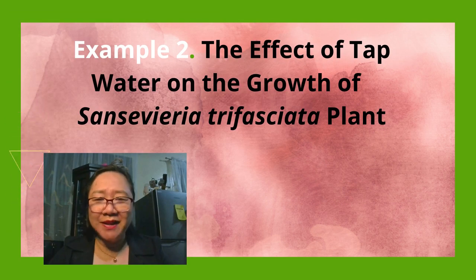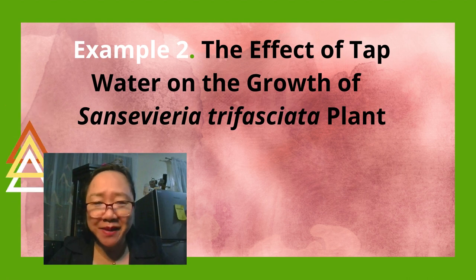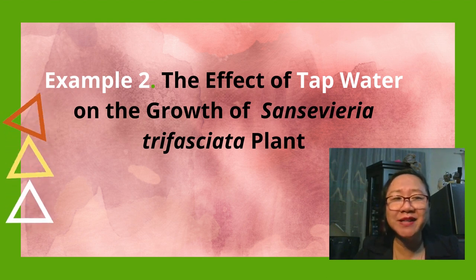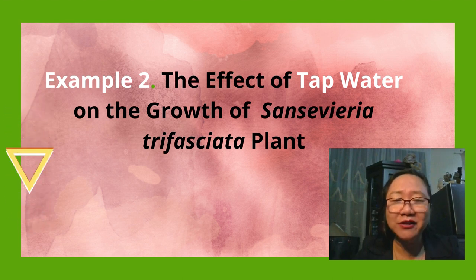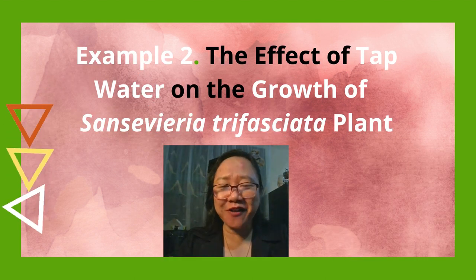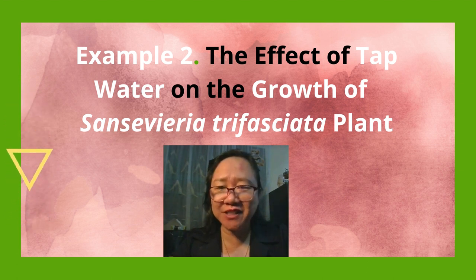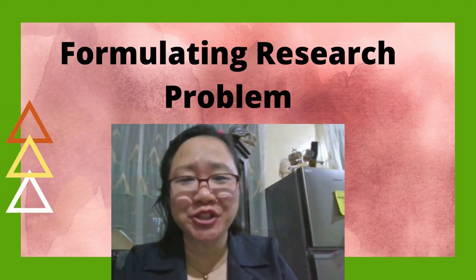Let's have another example. Our title is: The Effect of Tap Water on the Growth of Sansevieria trifasciata Plant. Sansevieria trifasciata plant is commonly known as a snake plant. Can you identify the independent variable? If your answer is tap water, you're right. Because we can manipulate or change the amount of water in order to see its effect on the growth of Sansevieria trifasciata plant. Can you identify the dependent variable? If your answer is the growth of Sansevieria trifasciata plant, then you are correct.